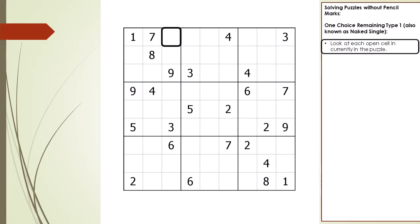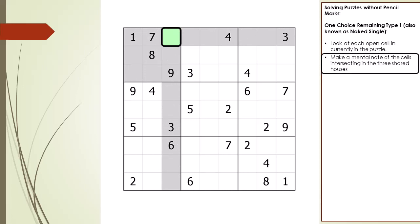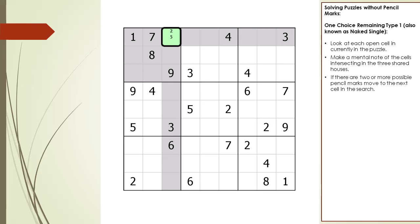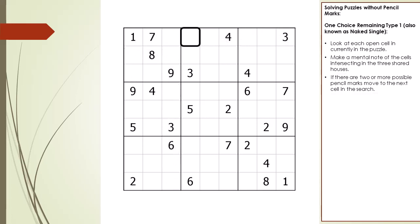We begin by looking at each cell, making a mental note of the intersection cells of the three shared houses. We determine the possible pencil marks — we don't actually write them in, we just make a mental note that there is more than one possible pencil mark. Since there is more than one choice remaining, we move to the next cell and repeat the process until we find a cell having only one choice remaining.